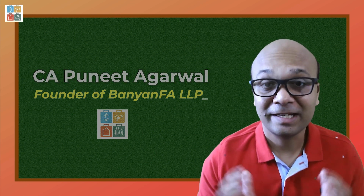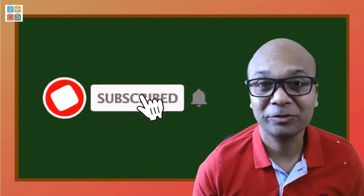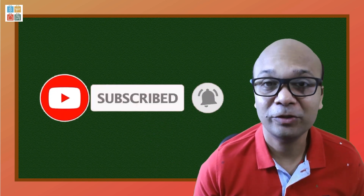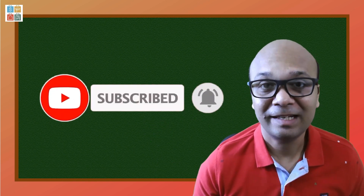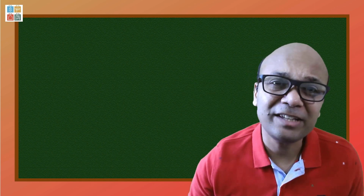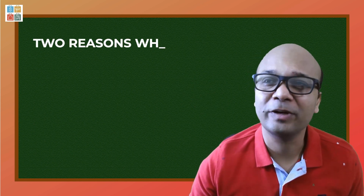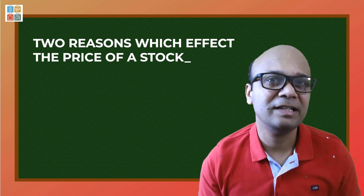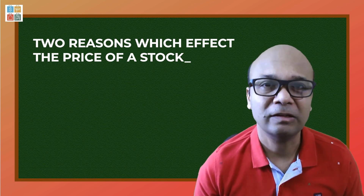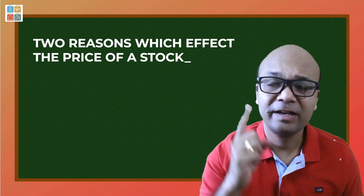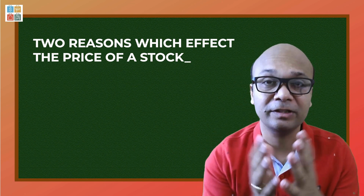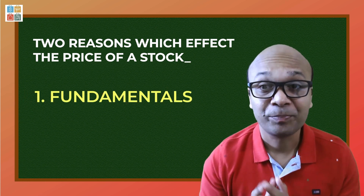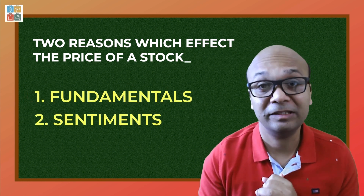If you like our videos, please do subscribe to us so that you can get a regular automatic flow of good videos coming your way. Let's get into it. A stock price can effectively go up and down for two reasons: the first, more critical and more important reason is fundamentals, and the second is sentiments.